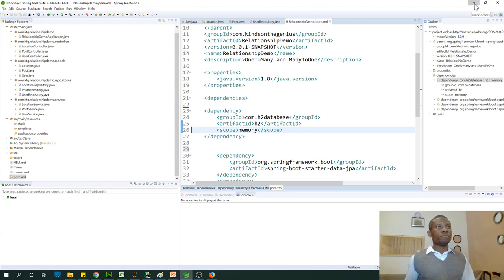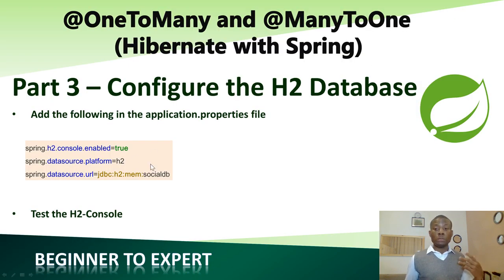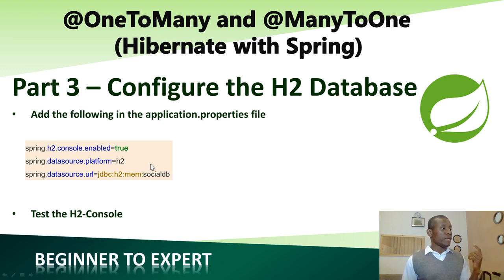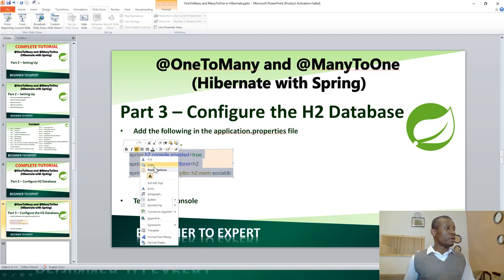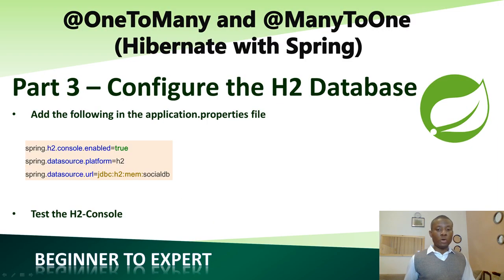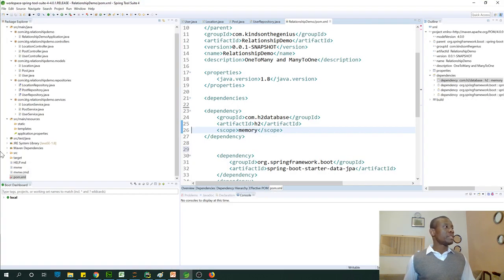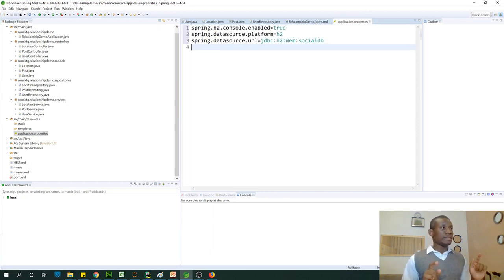The next thing you want to do is add the H2 parameters — the database parameters. For instance, we want to enable H2 console. H2 console is a graphical user interface in the browser that allows you to manage the H2 database. Then you specify the platform and also the H2 database name. In this case, I want to give it the name SocialDB. So let me go back to the application and paste it. I'm going to go to application.properties and just paste it in there. At this point, you've configured the H2 database.